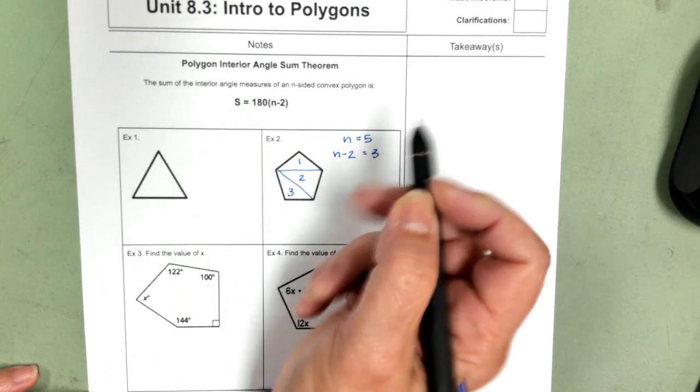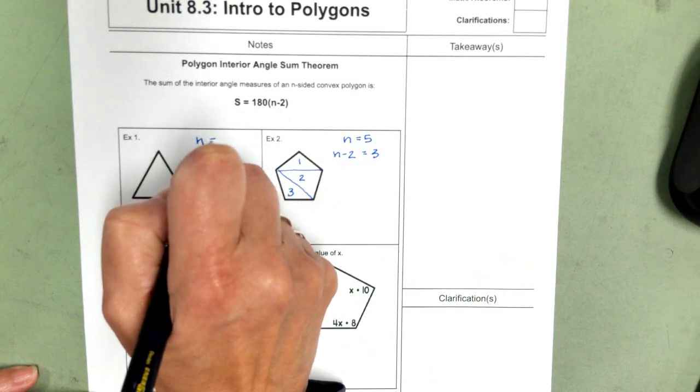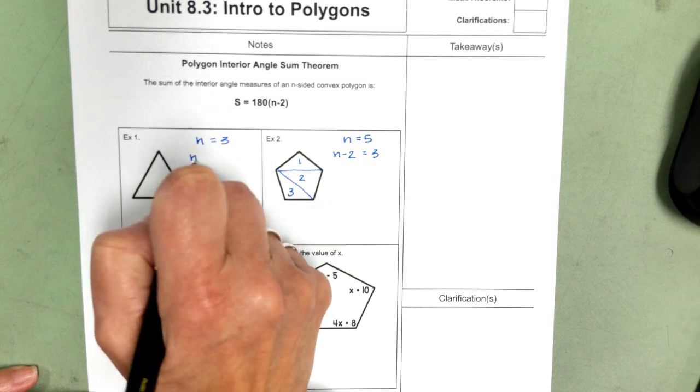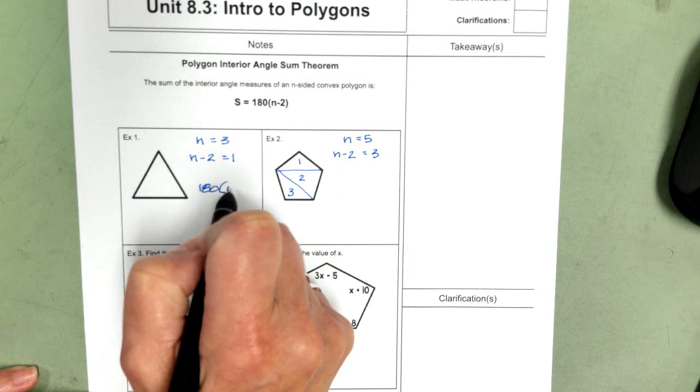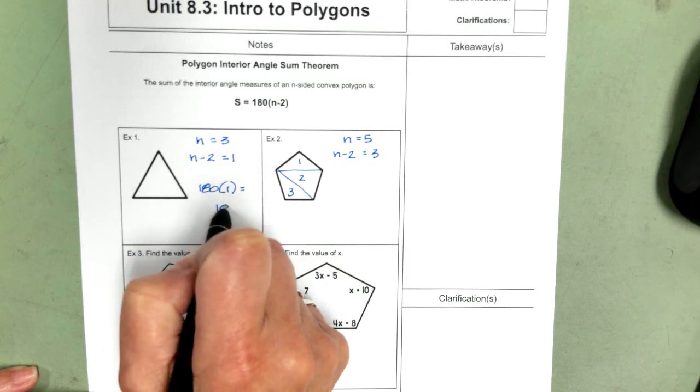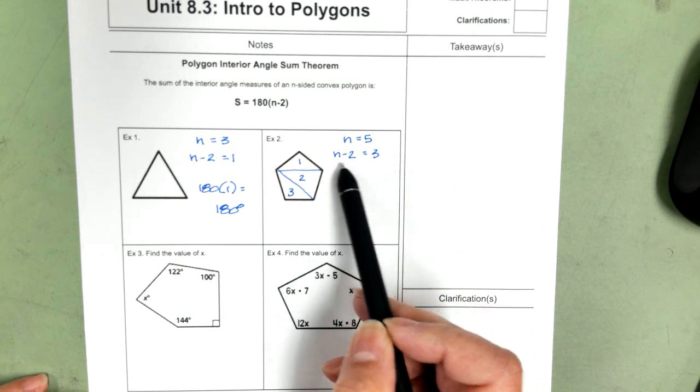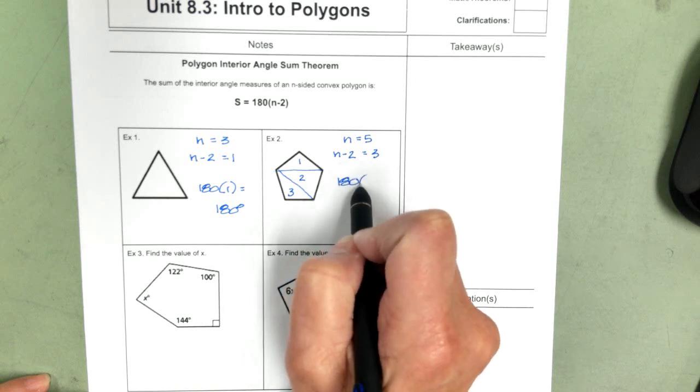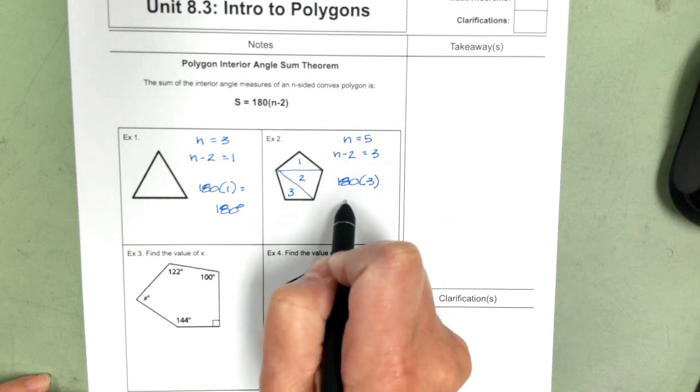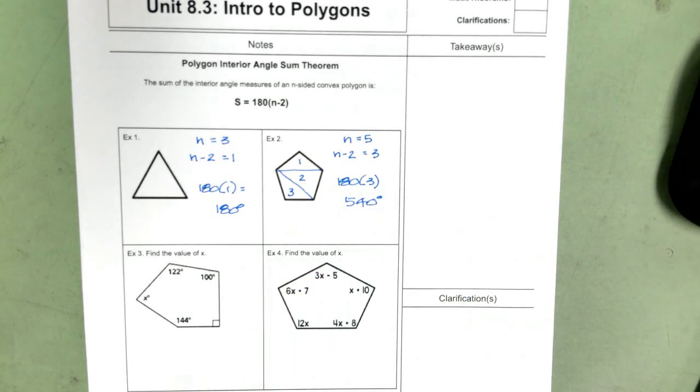This formula still works for this. We have n equals three, n minus two equals one. So the sum of the angles of a triangle is simply 180 degrees. Moving over here, we have five sides. That creates three triangles. So 180 times three is going to be 540 degrees. So any pentagon, if you add up all the angles, it's going to be 540 degrees.